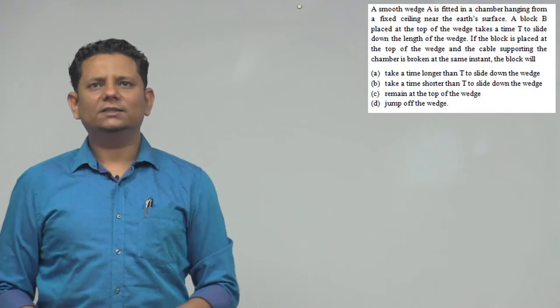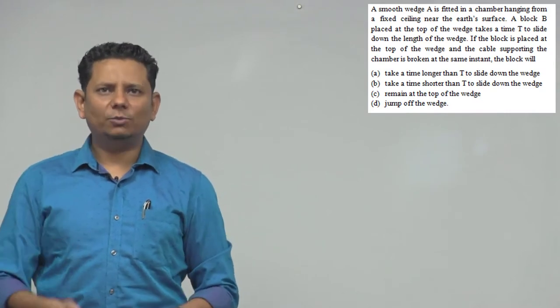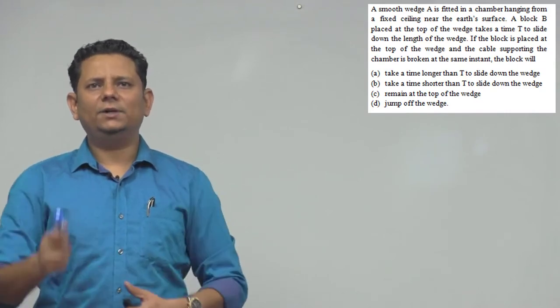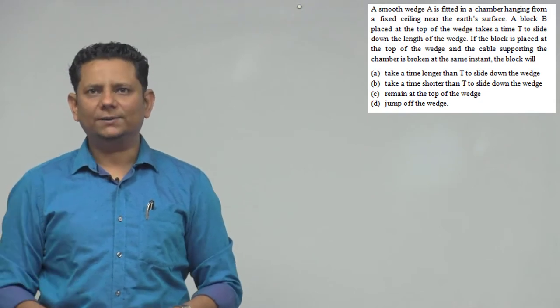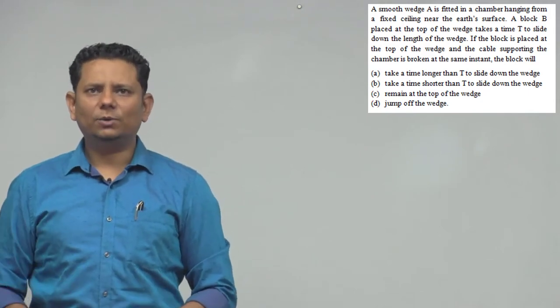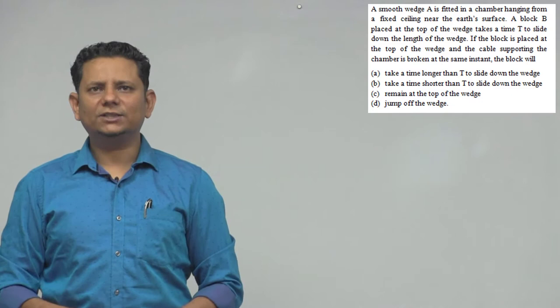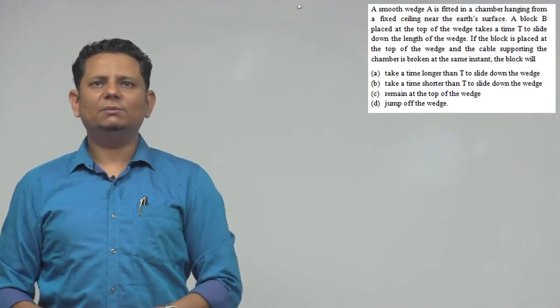Next question. Question says a smooth wedge A is fitted in a chamber hanging from a fixed ceiling near the earth's surface. A block B is placed on top of the wedge and it takes time T to slide down the length of the wedge. If the block is placed at the top of the wedge and the cable supporting the chamber is broken at the same instance...